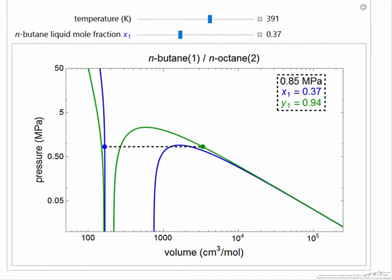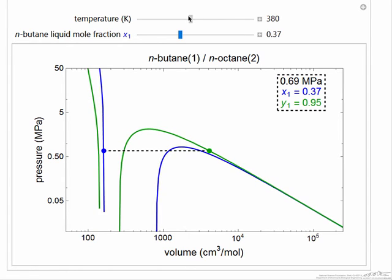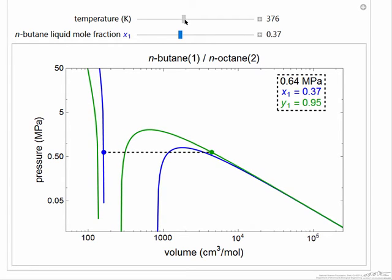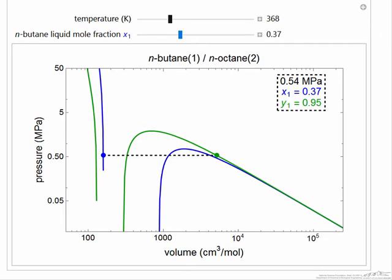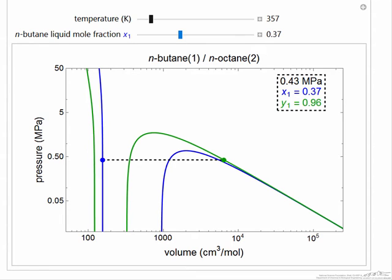Here's the interactive simulation. As we change the temperature, for example, both curves change, and we're still showing this liquid composition now, 0.37 in equilibrium with the vapor composition which changes as we change the temperature.